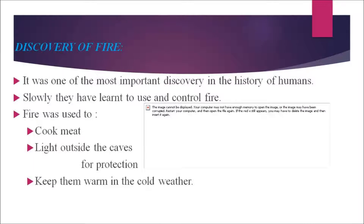There is an assumption that fire must have been discovered by accident — when two stones were struck together, creating a spark that burned some dry leaves, leading to the discovery of fire by early humans. It was one of the most important discoveries in human history. Slowly, early humans learned how to use and control fire. They used it to cook meat, to light the area outside caves for protection from wild animals, and to keep warm in cold weather.